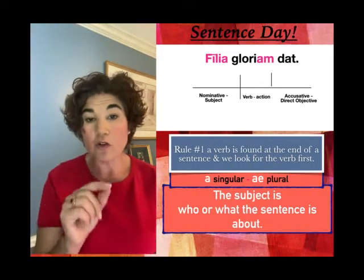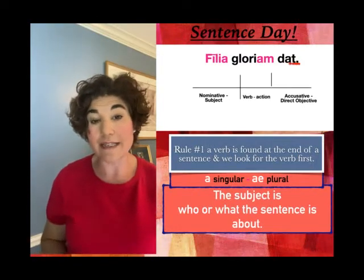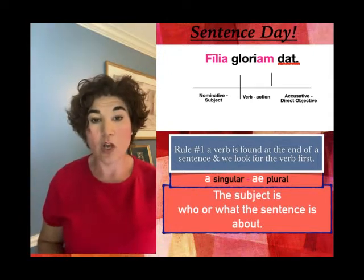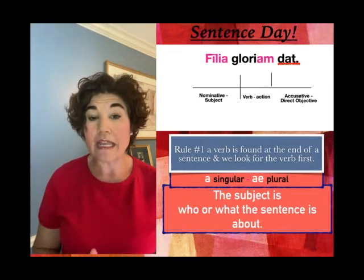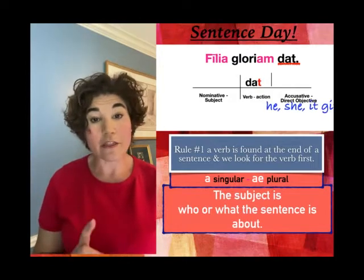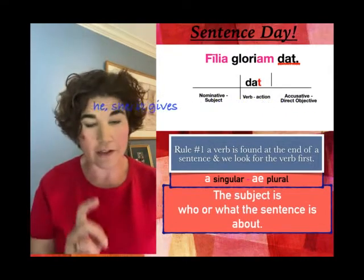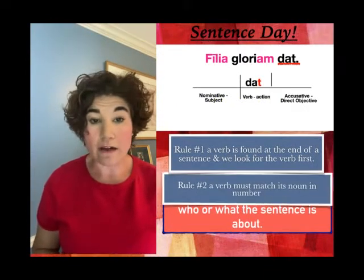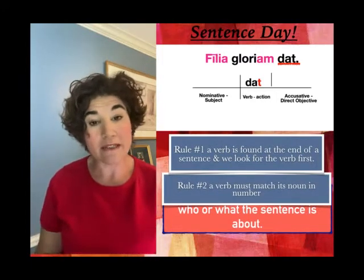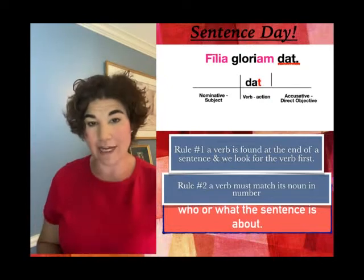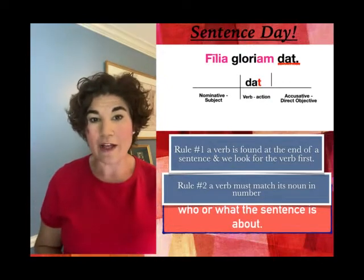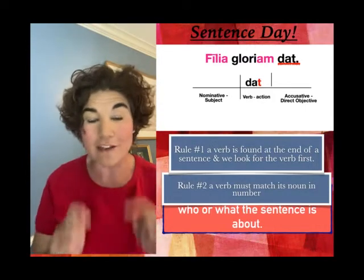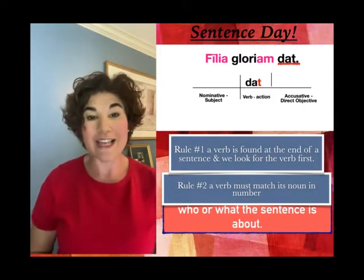So in 'philia, gloriam, dat' — dat is the verb. Dat is going to go on the line first in the verb location. Dat means he, she, or it gives in the third person singular. Singular is key. Remember rule number two: our verbs and our nouns have to match in number. That means if the verb is singular, the noun has to be singular. So in a long sentence, I could look for a nominative noun that was singular and know that was the subject.